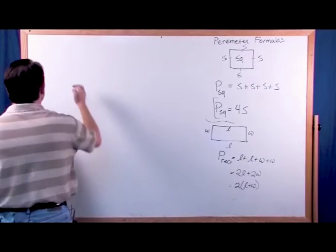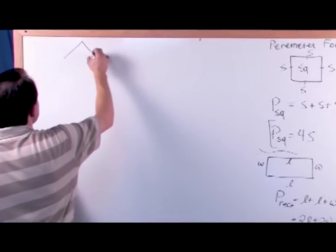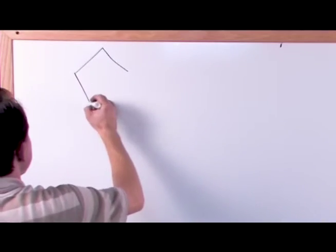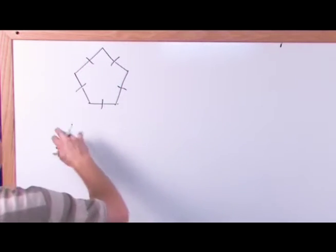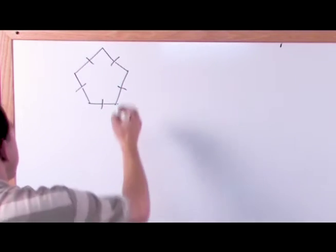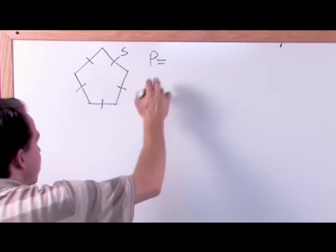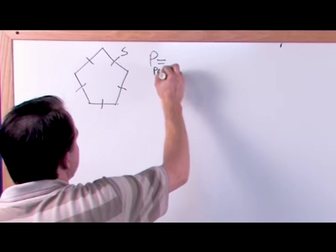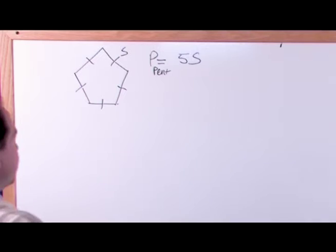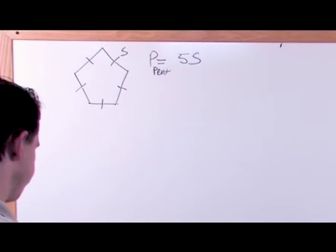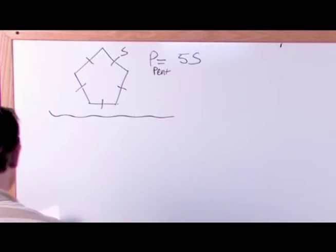Here's another formula you'll see sometimes: if you have a regular pentagon — a pentagon with all congruent sides — and the side length is s, then the perimeter of the regular pentagon is just equal to 5 times s, because you're adding up all five sides. So let's work some problems. Find the perimeter of this square.